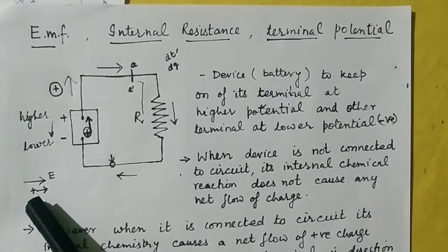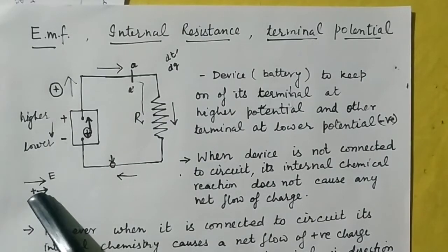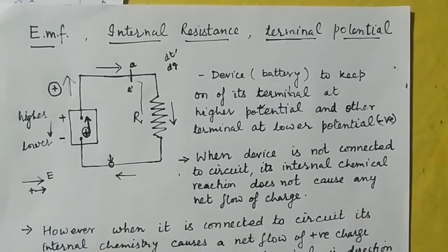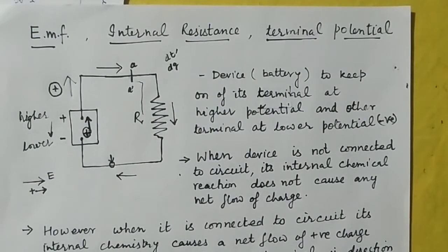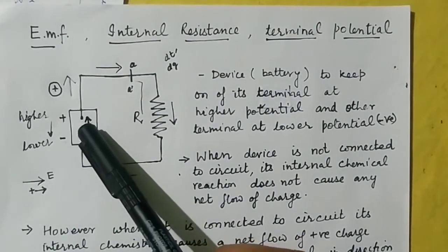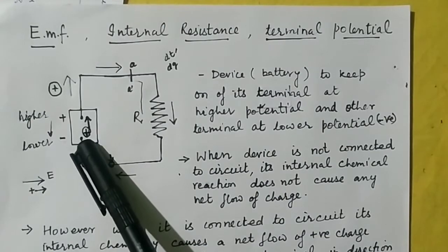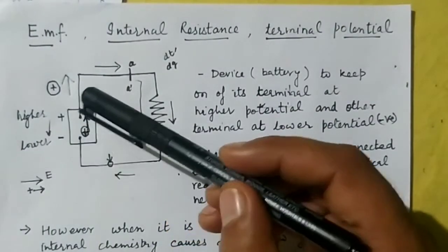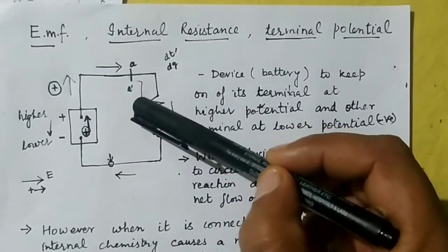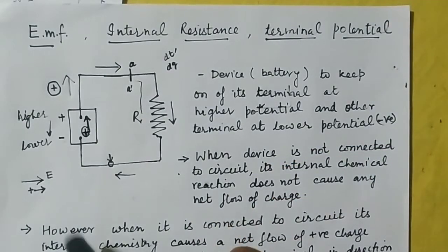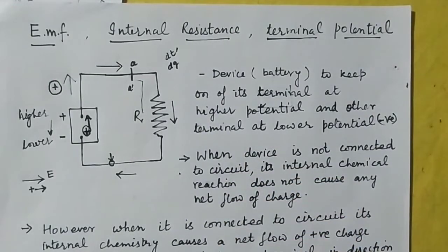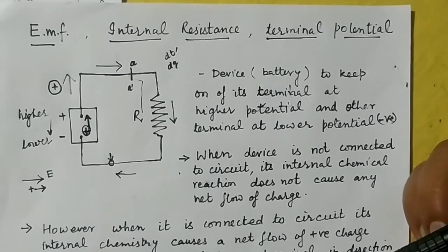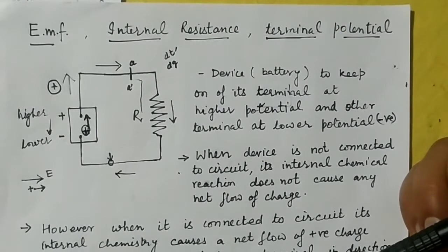If a charge is placed in an electric field and left free, it will automatically move along the direction of the electric field. But here, the positive charge is moving opposite to the electric field, which means some force is being applied on it. The chemical reaction inside the cell provides this force to move the positive charge from the negative plate to the positive plate. This movement of positive charge from negative to positive inside the cell also carries out in the external circuit, causing the movement of positive charge and the direction of current.